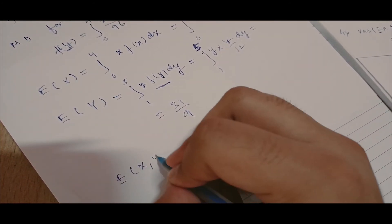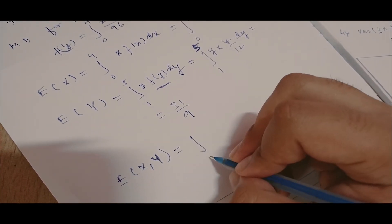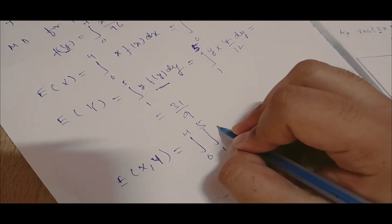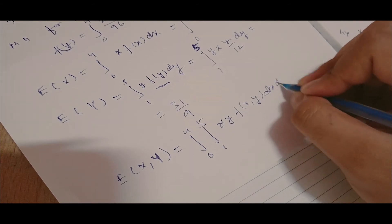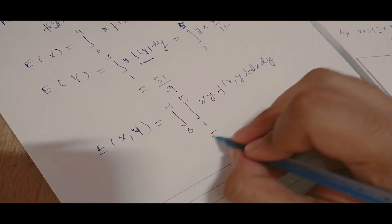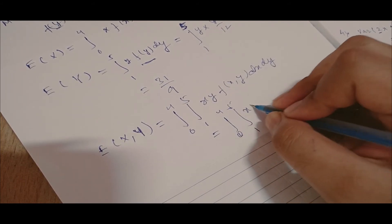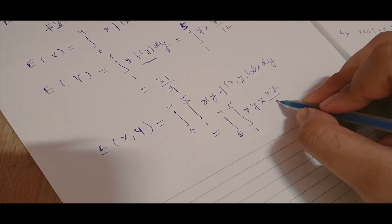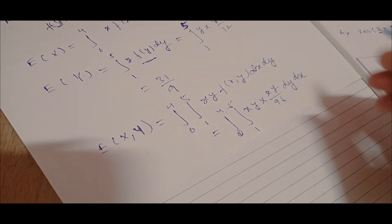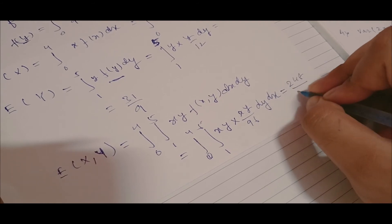Next step is finding E(XY). E(XY) = double integral over x from 0 to 4 and y from 1 to 5 of x·y·f(x,y) dx dy = integral of x·y·(xy/96) dy dx. After solving this double integral, E(XY) = 248/27.